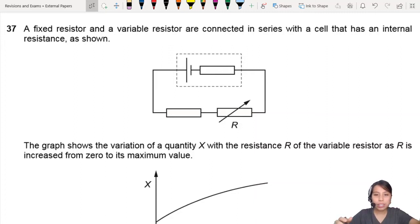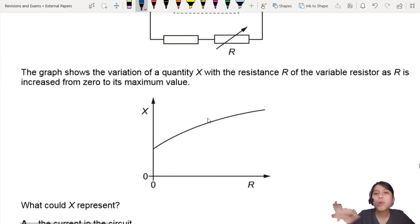A fixed resistor is connected, as you can see. And the variable resistor too. That's why we have the arrow over here. Now, how do you start this thing? A graph shows some don't know what quantity against R as you increase R from 0 to maximum.